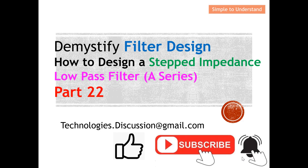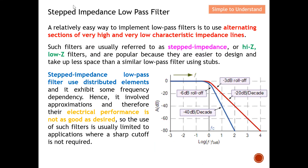Let's quickly understand what a step impedance low pass filter is, and also the advantages and disadvantages when we design a low pass filter using step impedance. This step impedance low pass filter is a relatively easy way to design a low pass filter, basically by alternating sections of very high and very low characteristic impedance lines. In fact, this is one of the easiest ways to design a low pass filter.